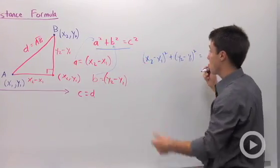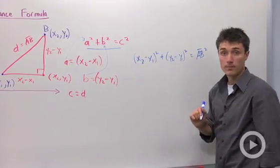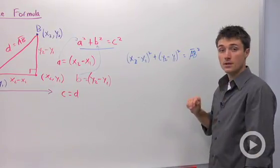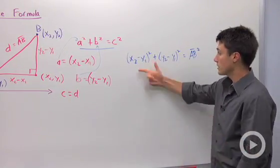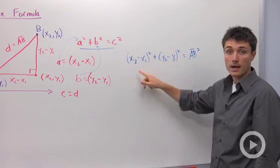And C we said is our distance, AB, and that's going to be squared. So if you want to know the square of the distance in your coordinate plane, you subtract your X's, square them, subtract your Y's, square them, and then add them up.